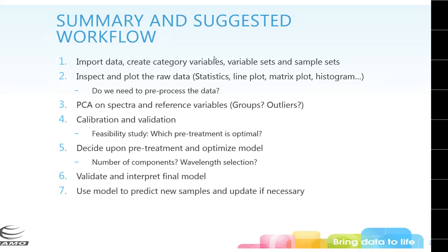A quick summary of the suggested workflow: import your data; create category variables; set variable and sample sets; inspect and plot your data; run descriptive statistics and look at line plots and histograms to determine if pre-processing is needed; run PCA to get a picture of your data showing groups and outliers, to determine whether to do classification or regression. Then do calibration and validation feasibility studies to find the optimal pre-treatment; optimize your model and determine the number of components and wavelength selection; always validate; interpret your final model; and finally use it to predict new samples.